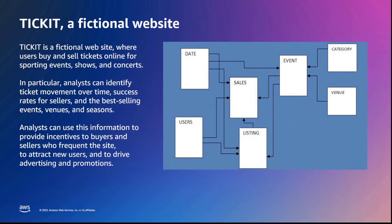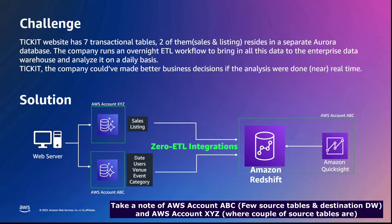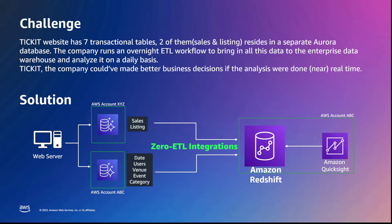Ticket is a fictional website where users buy and sell tickets online for sporting events, shows, concerts, etc. The Ticket website's backend is made up of seven Aurora MySQL tables. The challenge is that out of seven backend tables, five belong to an Aurora MySQL database in account ABC and the other two belong to another team in account XYZ. Currently, the only way to run holistic analytics is to run a nightly ETL process and run analytics on a daily basis.